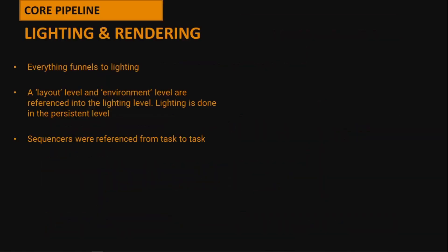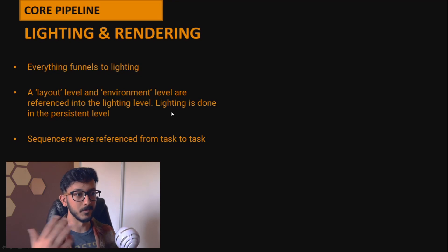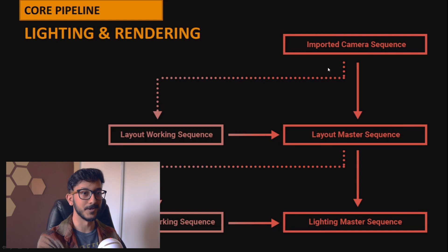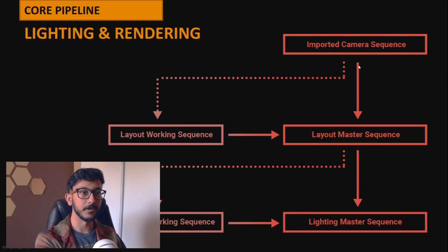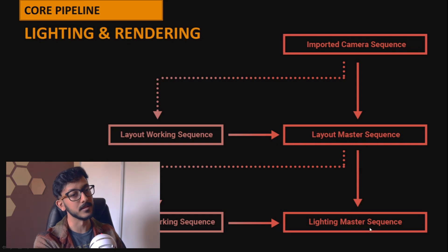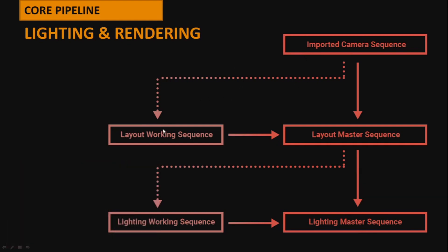For lighting and rendering — the final step — everything funnels into this. We have our layout level and environment level; their master levels get streamed into our lighting level. Sequencers are also referenced task to task: the camera sequence gets imported as a shot track into the layout sequence where animation is blocked, and that layout sequence gets imported as a shot track into the lighting sequence. Multiple artists can have their own working sequencer files and roll changes into the master, again to avoid version control conflicts.